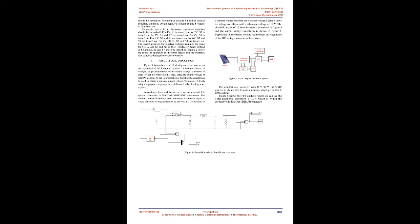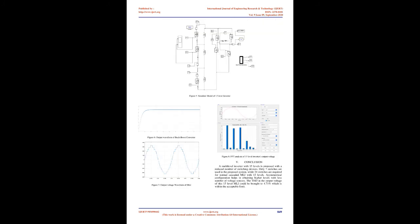The MLI uses 7 switches to obtain 15 levels. Switches S4, S5, S6, and S7 create an H-bridge, while S1, S2, and S3 are the series connected switches with the DC sources. The switching table of the inverter is depicted in Table 1. For 0V output from the H-bridge, either S4 and S6 or S5 and S7 should be turned on. For positive voltage, S4 and S5 should be turned on, and to obtain negative voltage, S6 and S7 need to be turned on. To obtain 0V, all series connected switches should be turned off.